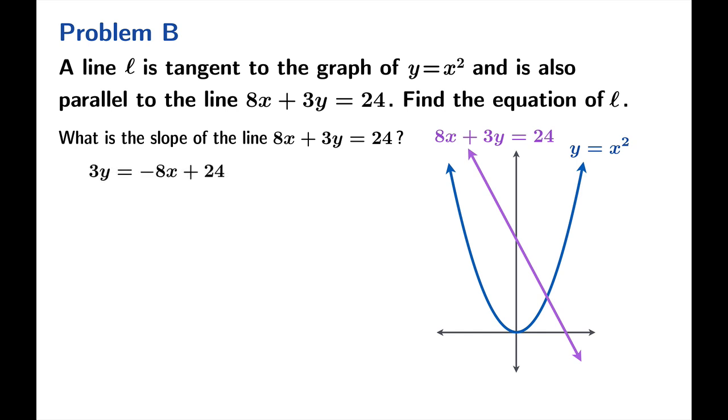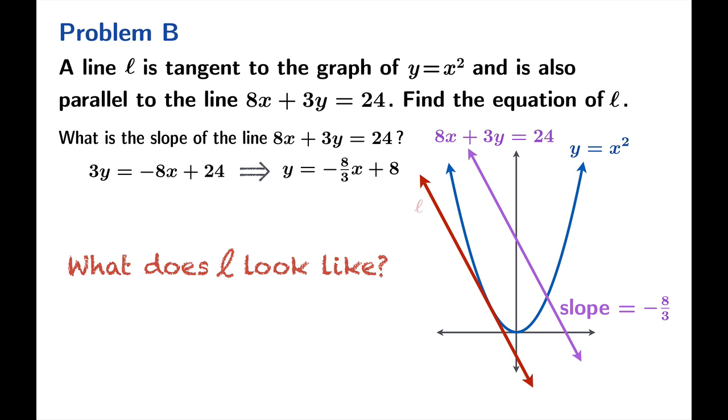We should ask the question: what is the slope of 8x plus 3y equals 24? If you do a little bit of simple algebra, you find out that the slope is negative 8 thirds. So the slope of this purple line is negative 8 thirds. And what we want to do is to find L. What does L look like? It's parallel to this line but it's tangent to the parabola. So we should be looking out here somewhere to find L. The question is, what are the coordinates of this point?